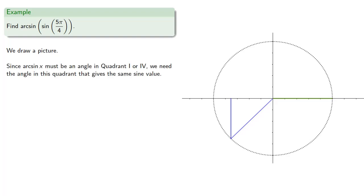Since arc sine of x must be an angle in quadrant one or four, we need the angle in this quadrant that gives us the same sine value. This is going to be a reflection across the y axis. We need to find the reference angle, which will be pi fourths, so the angle in the fourth quadrant will also be pi fourths. But since we will have rotated clockwise, the arc sine will be negative pi fourths.